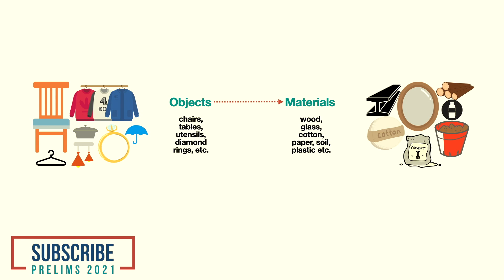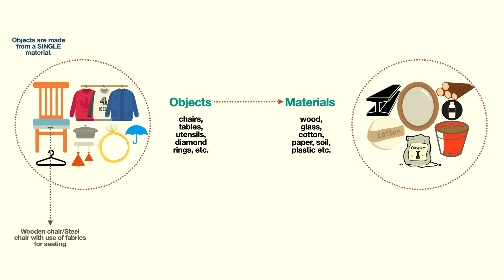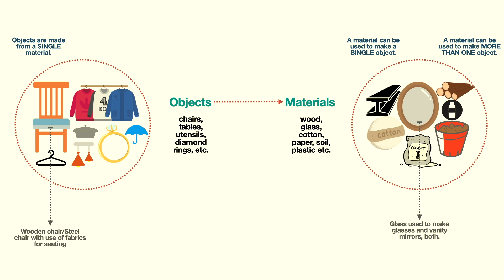If you look closely, it can be observed that some objects are made up of only one type of material, while some things are made from more than one material. For example, a chair can either be made from only wood, or it can be made from metal which may have other parts made from fabrics. Similarly, the same material can be used to make one or more objects — for example, glass is used to make so many different objects like cutlery, vanity mirrors, and things used across many industries.